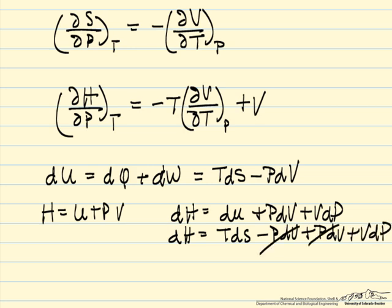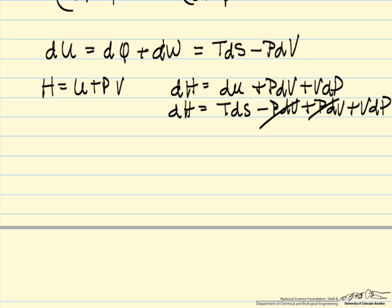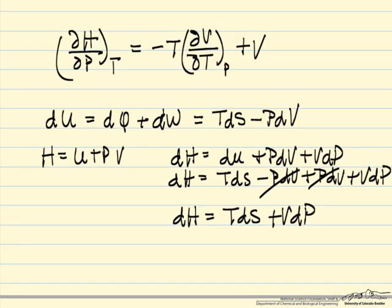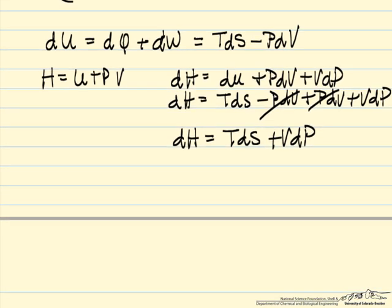So these cancel, and so we have the differential of H in terms of entropy and pressure. So we're part way there. We want the partial of H with respect to P at constant T.